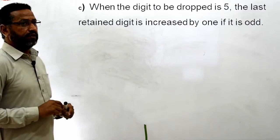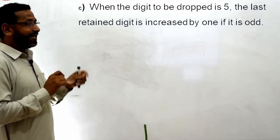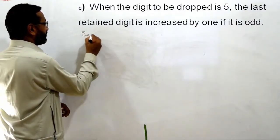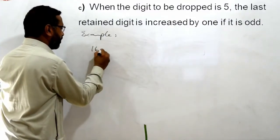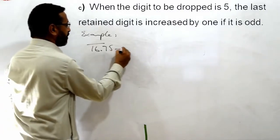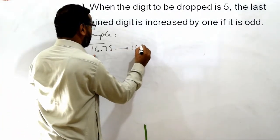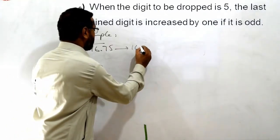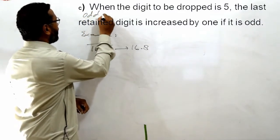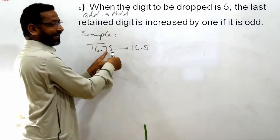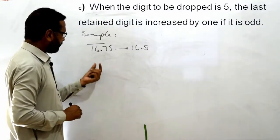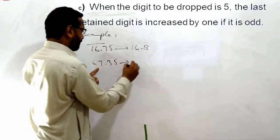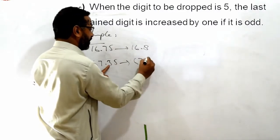Rule C: When the digit to be dropped is exactly 5, the last retained digit is increased by 1 if it is odd. Odd ہے تو add ہوگا. میں students سے ہمیشہ کہتا ہوں: odd اور add کی spelling دیکھیں، دونوں میں double D آتا ہے — اگر odd ہو تو add کر لیں. Example: 16.75 — 5 کو drop کریں، 7 odd ہے، تو 8 ہو جائے گا. اسی طرح 67.35 — 5 کو drop کریں، 3 odd ہے، تو 4 ہو جائے گا: 67.4.